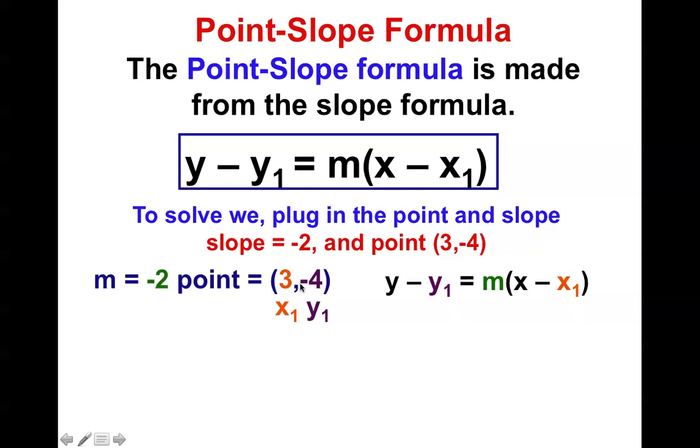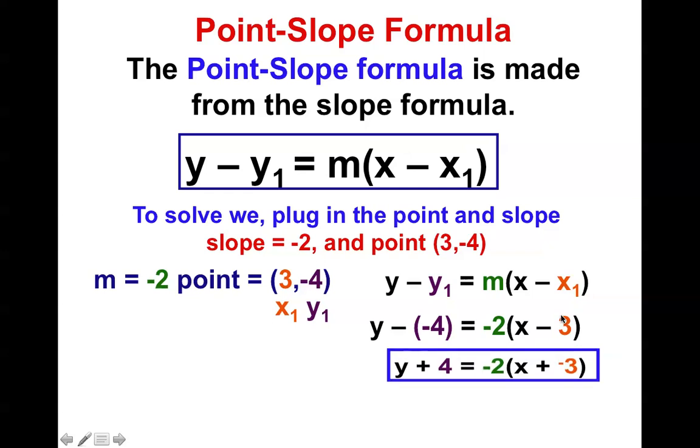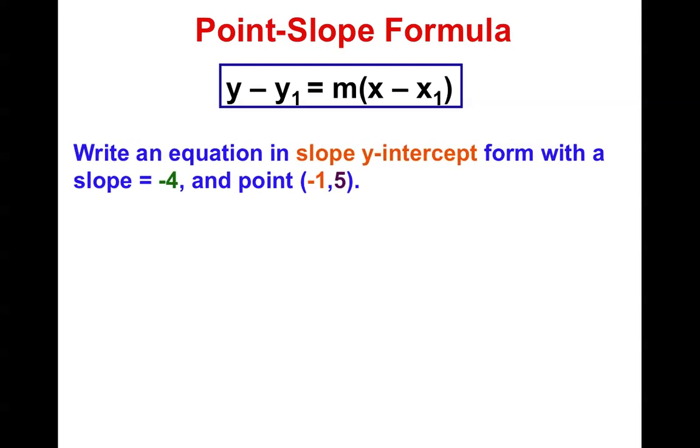Now we just need to solve for y. We do that by minus negative 4 is plus positive 4. Negative 2 times x will be negative 2x. And negative 2 times negative 3 will be positive 6.